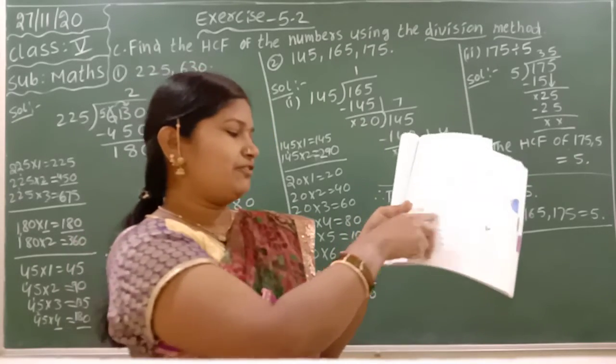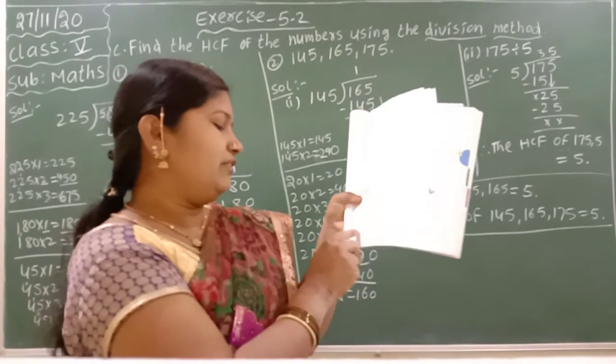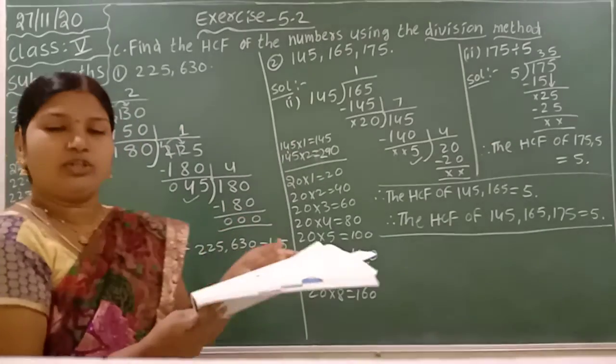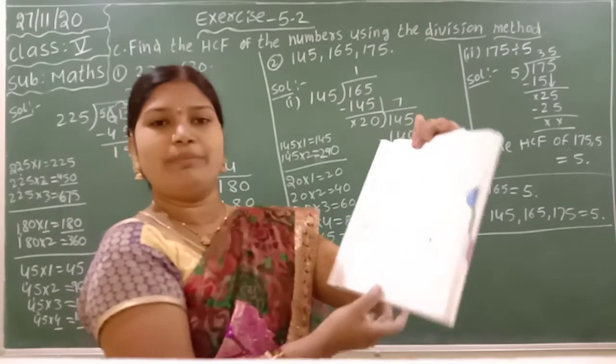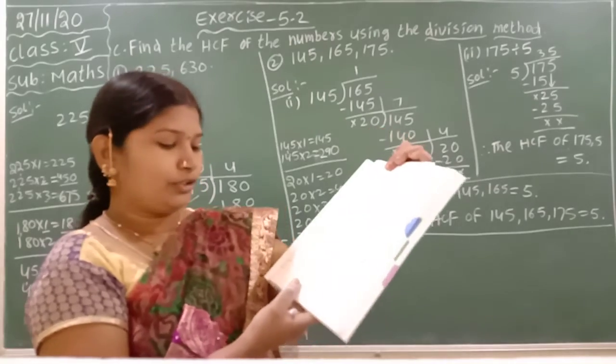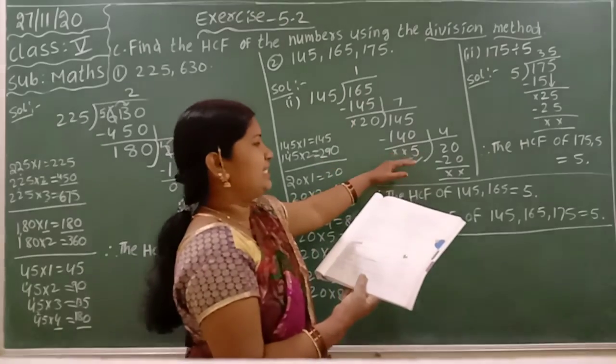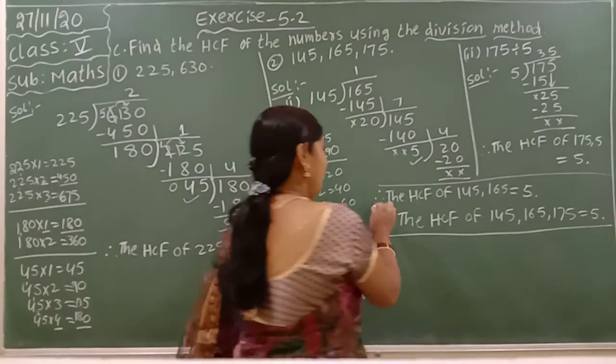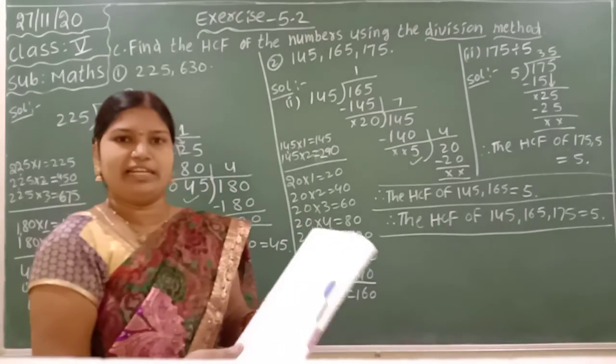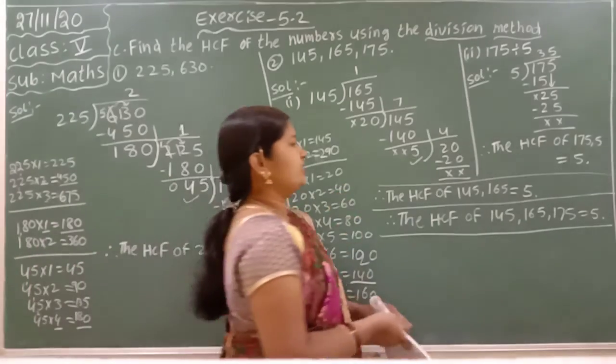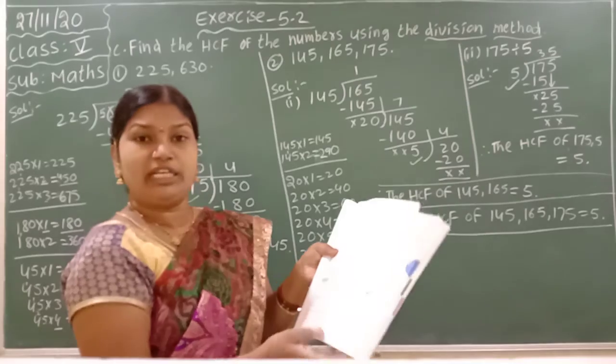Page number 99, they given Exercise 5.2. Find the HCF of the numbers using the division method. If they given two numbers, you can do directly like this. If they given three numbers - see problems 3, 4, 5, 6, 7, 8, all problems they given three numbers - first you have to do the given first two numbers like this method. Next, you are getting one HCF, and the third number you do division with the HCF. Then you will get the answer. Here, you have to take dividend as the HCF, not the quotient.